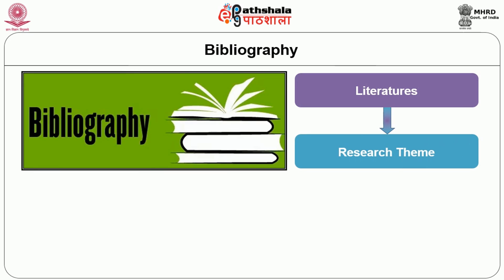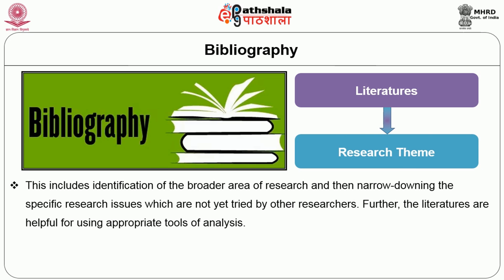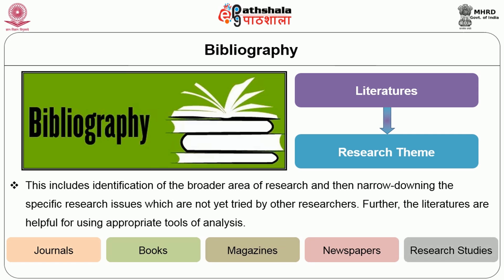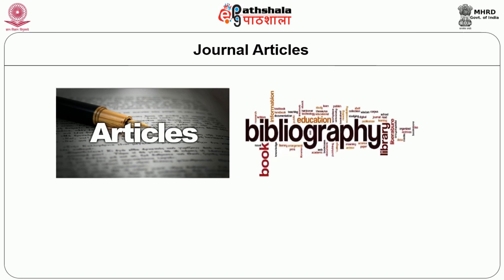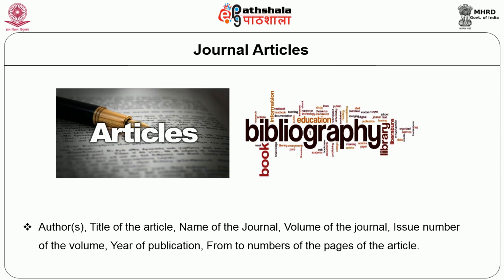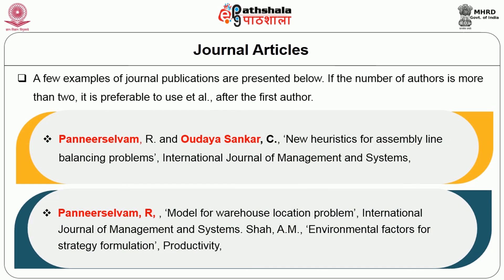Bibliography: Each research work is based on a set of literatures forming the foundation for the research theme. This includes identifying the broader area of research and narrowing down specific research issues not yet tried by other researchers. Literatures help in using appropriate tools of analysis. Bibliography is an alphabetical catalog of different literatures used in the research. References can be classified into journals, books, magazines, newspapers, and research studies. A journal article entry includes authors, title of the article, name of the journal, volume, issue number, year of publication, and page numbers.